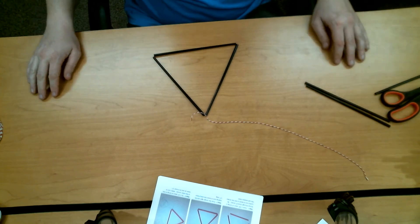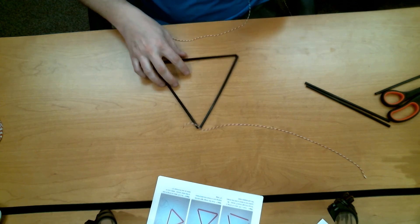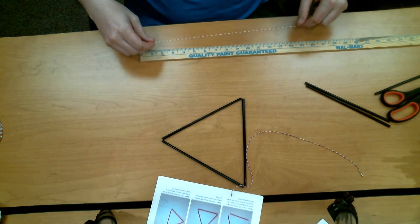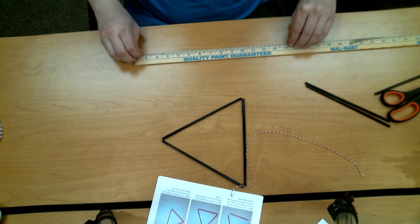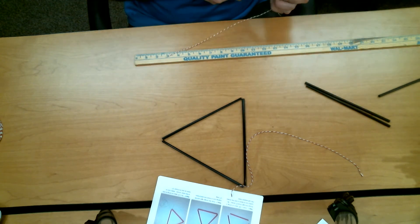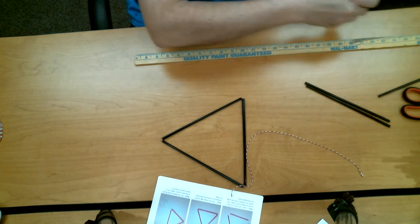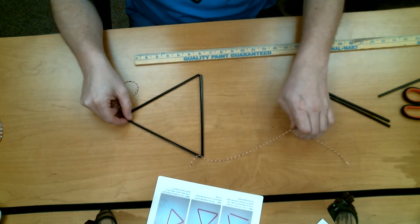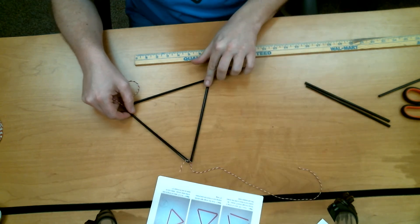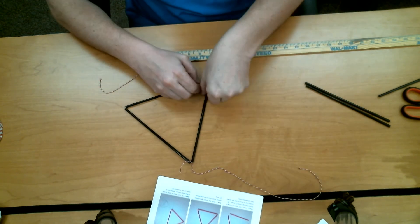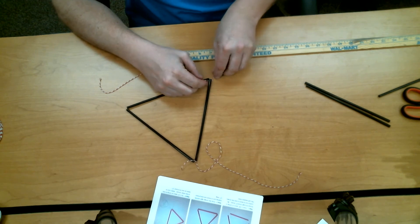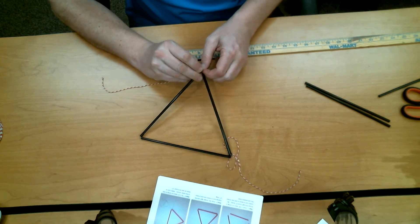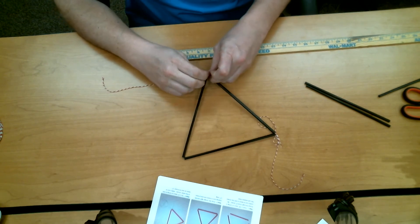For our next step, we're going to take that spool of string, or our piece of unspooled string again, and we're going to measure off 14 inches of it. Cut off a 14 inch piece. We're going to tie this to one of the other two corners that don't have a tail coming out of it. So there's our tail coming out of the top. I'm going to tie it down here on this bottom corner. Again, keep your string pretty short when you tie the knot. You don't want to waste a whole lot of string around this knot. Tie it in there with a good double knot.